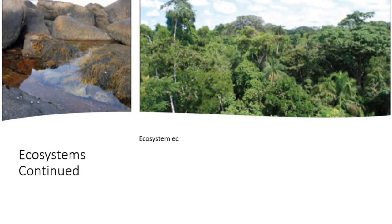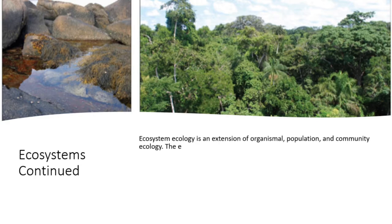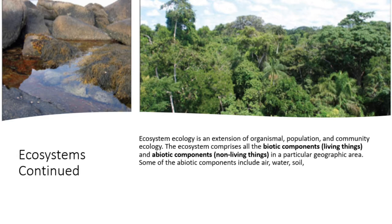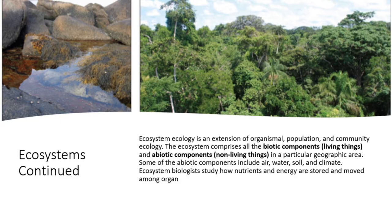Ecosystem ecology is an extension of organismal, population, and community ecology. The ecosystem comprises all the biotic components — living things — and abiotic components — non-living things — in a particular geographic area. Some of the abiotic components include air, water, soil, and climate. Ecosystem biologists study how nutrients and energy are stored and moved among organisms in the surrounding atmosphere, soil, and water.